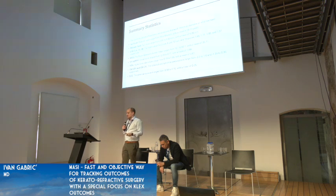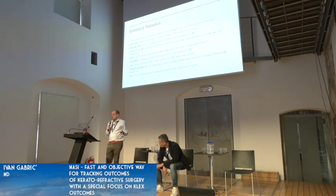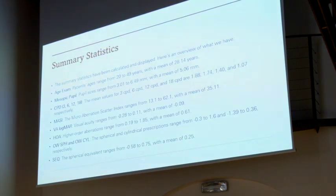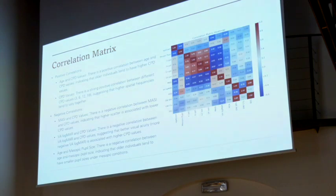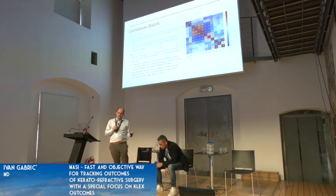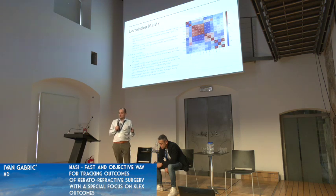In the summary statistics, the average age was 28.14, mesopic pupil 5.06, and CPD was 188, 174, 104, and 107. What's important is MASI ranged all the way from 13 to 62, and LogMAR on average was 0.009 — so all of them were better than 20/20, with extremely low spherical equivalency and ocular wavefront issues. We created a correlation matrix, and the only real factor that we recognized as a single important predictor for contrast sensitivity was MASI, accounting for up to 46% of the contrast sensitivity score.